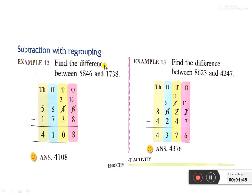Example: find the difference between 5846 and 1738. This is a 4-digit number. When you do the subtraction, first we have to write the bigger number first. Both numbers are 4-digit numbers, so we check the first digit: here 5, here 1. So 5846 is the bigger number — we write it first. Then 1738.